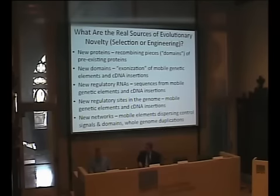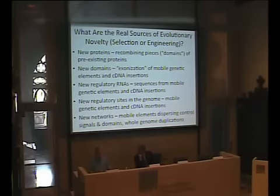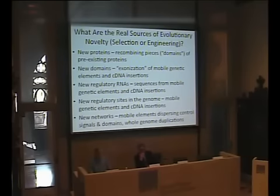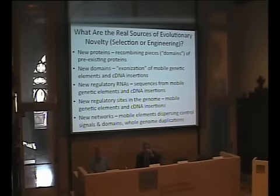Where do new proteins come from? Frequently it comes from recombining pieces or domains of preexisting proteins. Where do new domains come from? We know that they come from exonization of mobile elements and from cDNA insertions. New regulatory sites occur in the genome from mobile elements and cDNA insertions — I'm actually surprised that the frequency of identifiable elements is as high as it is. Where do new networks come from? Again, this can happen from the action of mobile elements.